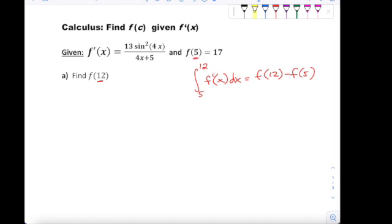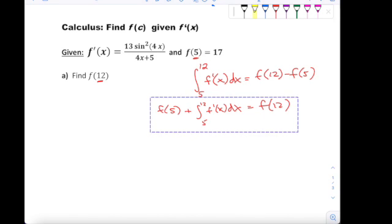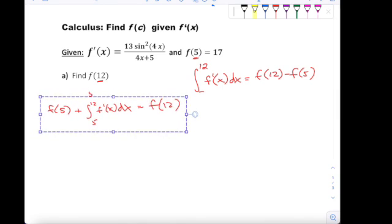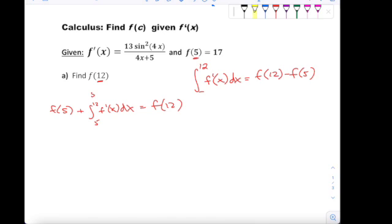What we're really looking for is f(12). So I can just manipulate this like any other equation. I can just add f(5) to the other side, and so what I'm going to have is that f(5) plus that definite integral from 5 to 12 of f'(x) dx should give you f(12), the value you really want. Let's just use what we have here.